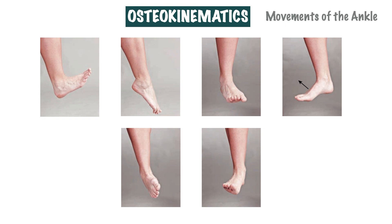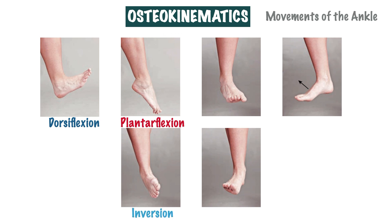Last but certainly not least are the osteokinematic movements of the ankle. First is dorsiflexion, described as lifting or pointing the toes towards the body — the same movement as pulling your foot off the gas pedal while driving. Next is plantarflexion, the pointing of the toes or ball of the foot downward, representing pressing down on the gas pedal. Next is inversion, a rotation of the foot towards the midline of the body. Next to this is eversion, a rotation of the foot away from the body. Supination is unique as it is a combination of inversion, adduction, and plantarflexion. Pronation is also a combination of movements, involving eversion, abduction, and dorsiflexion.